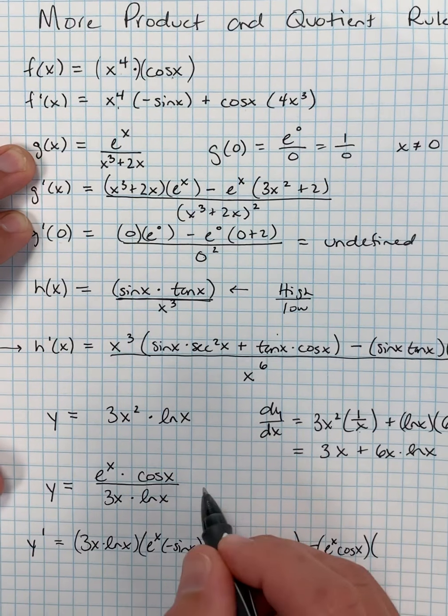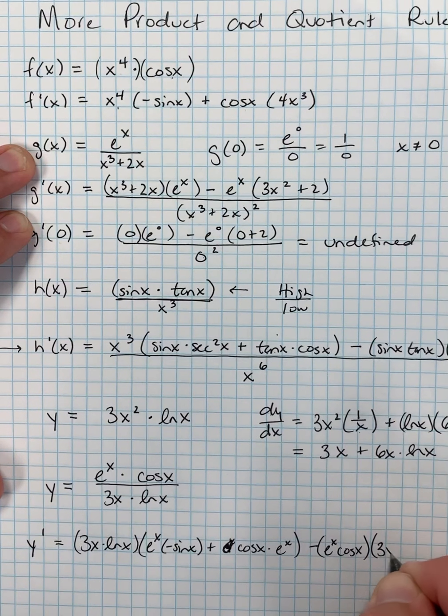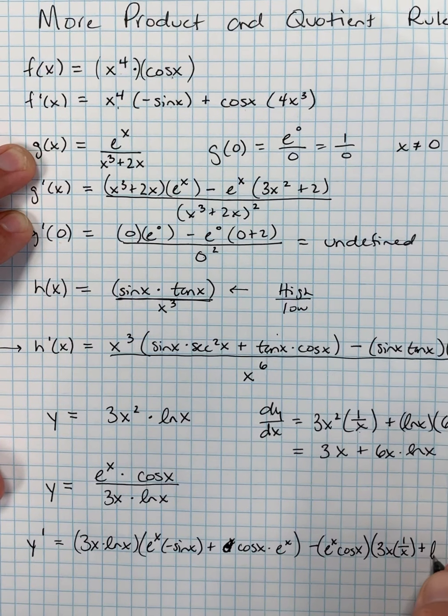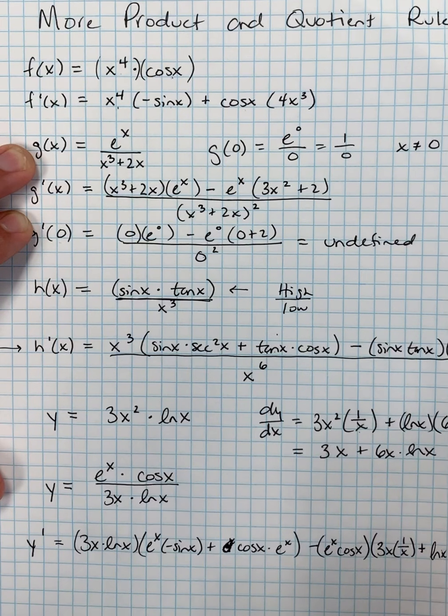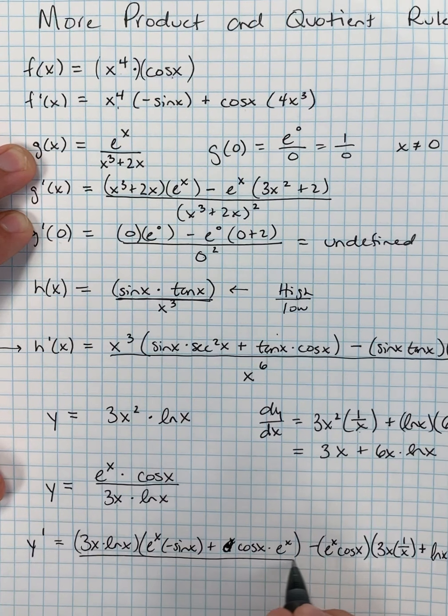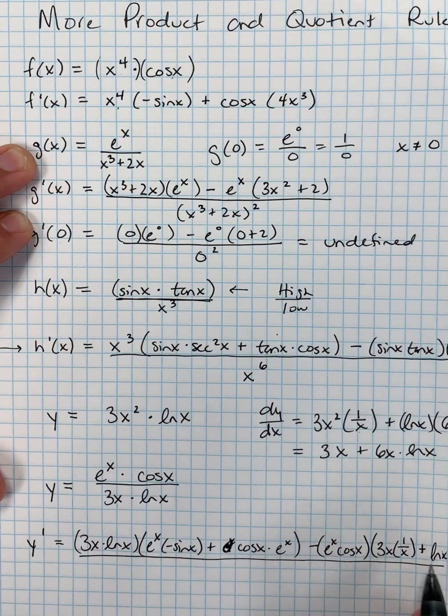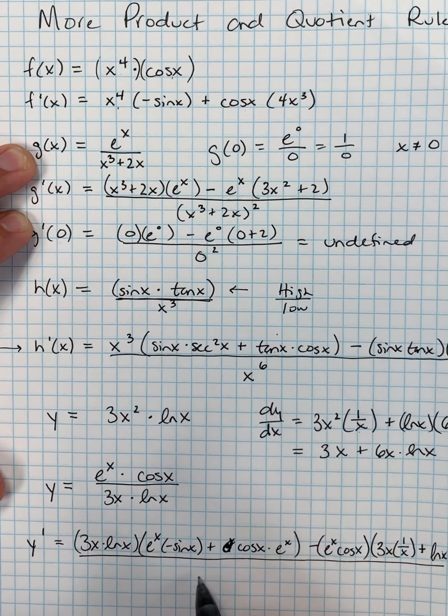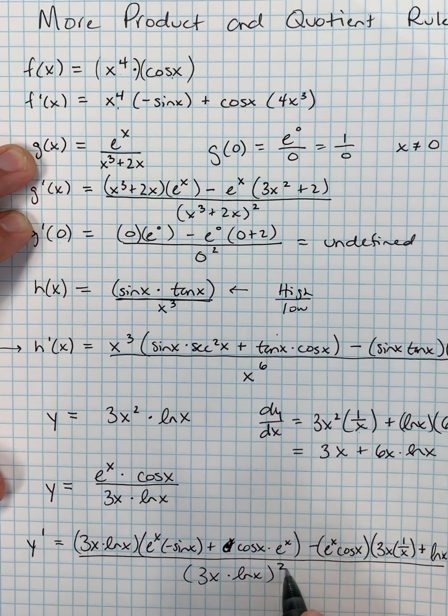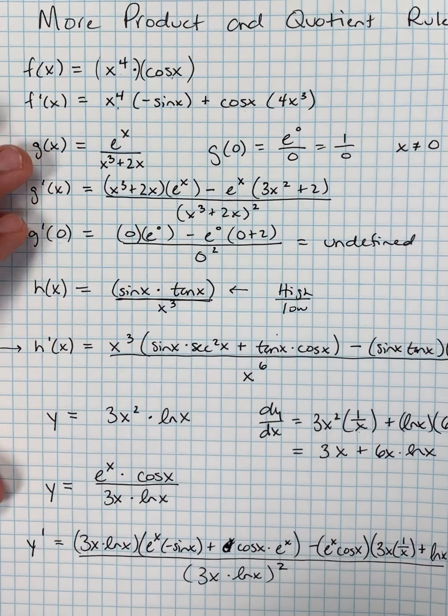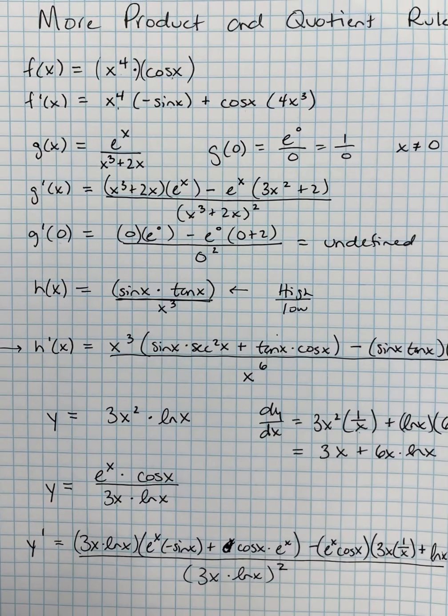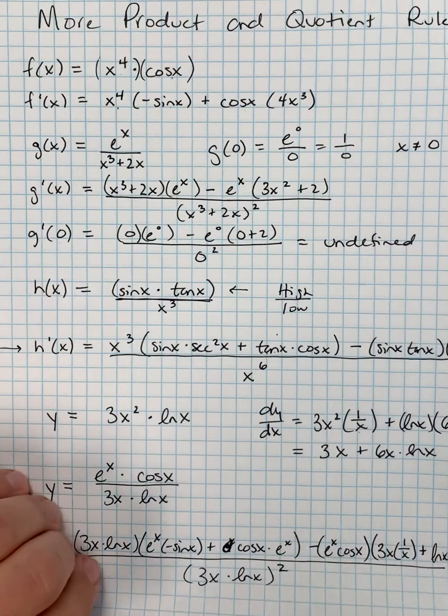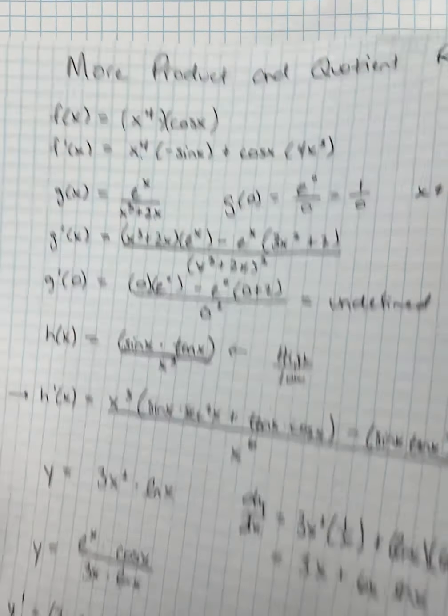d low, another product rule. We have a 1, d2, plus 2, d1 in our d low. So 1, d2, plus 2, d1, low, d high, minus high, d low, over the square of what's below. And I might be able to do some simplification there, but for now I'm just going to leave that as kind of a complicated example, and just kind of let it alone. Where you might get into some trouble here, where this could throw you for a loop,